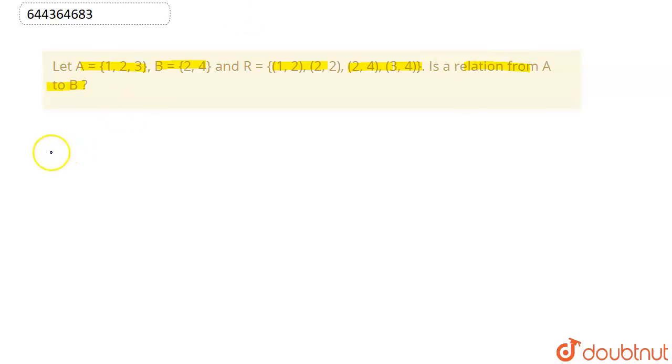We know that any relation R is said to be a relation from A cross B if and only if R is a subset of A cross B. R is subset of A cross B, then only we can say that this is a valid relation.